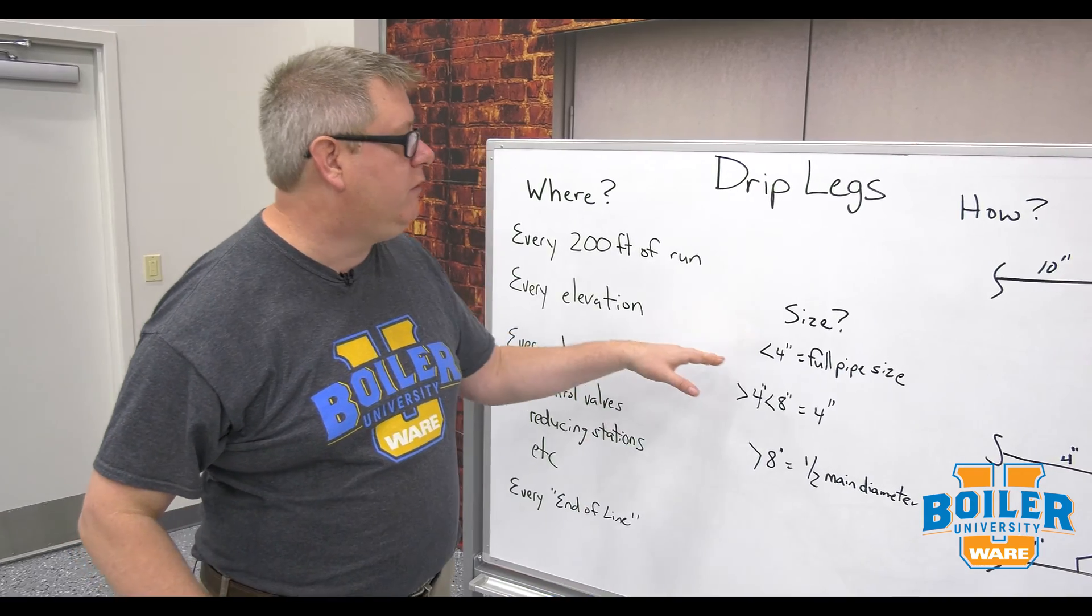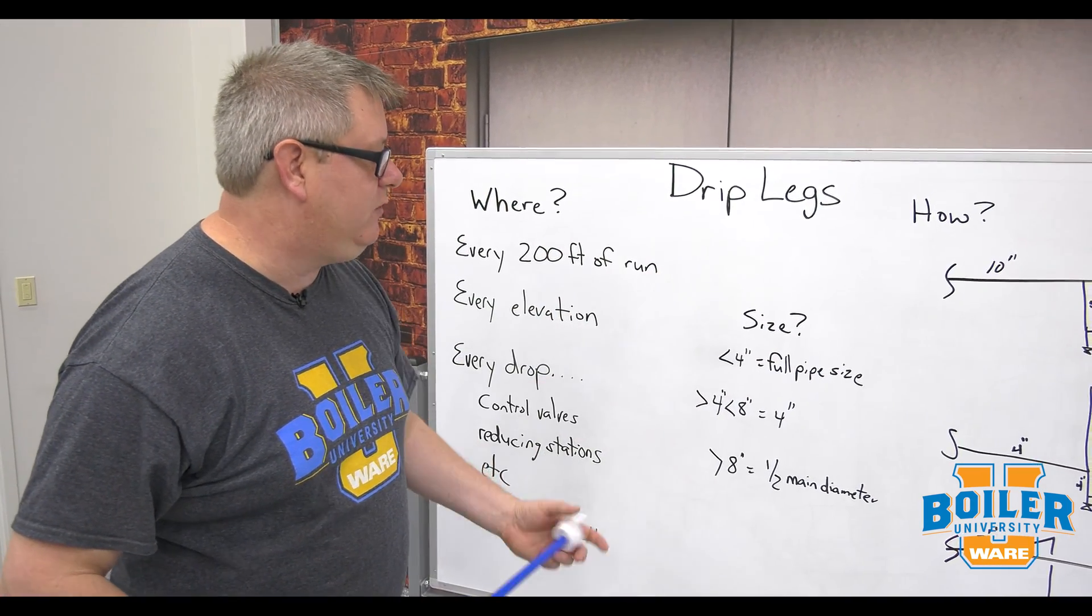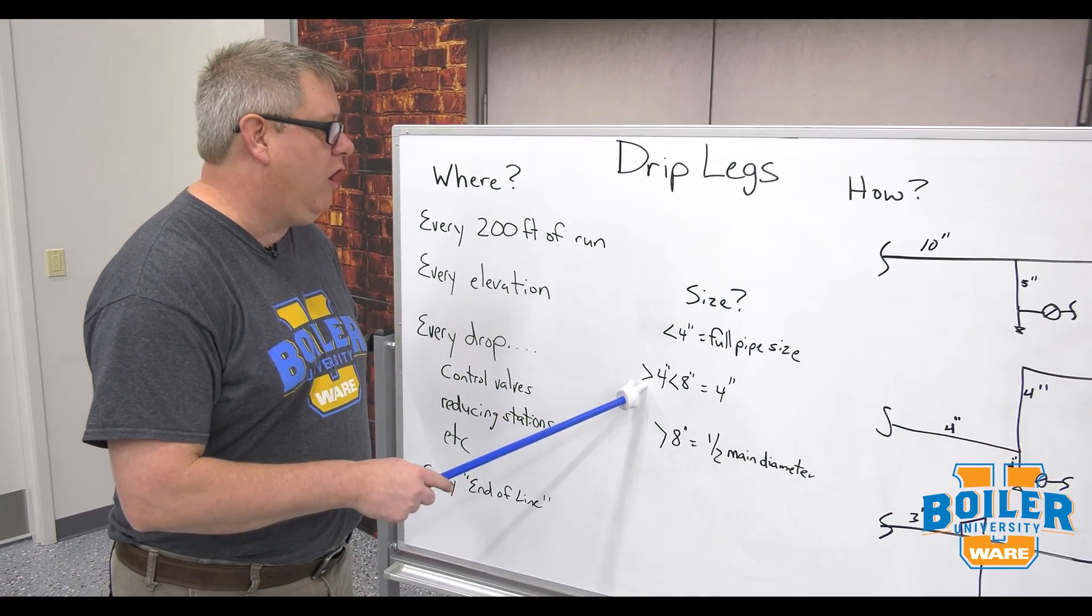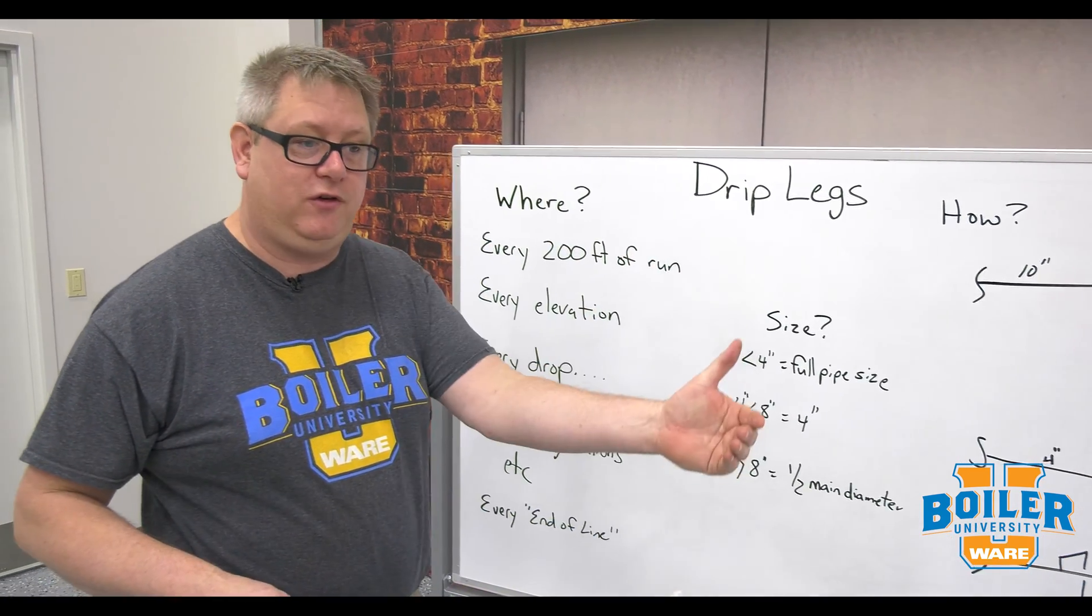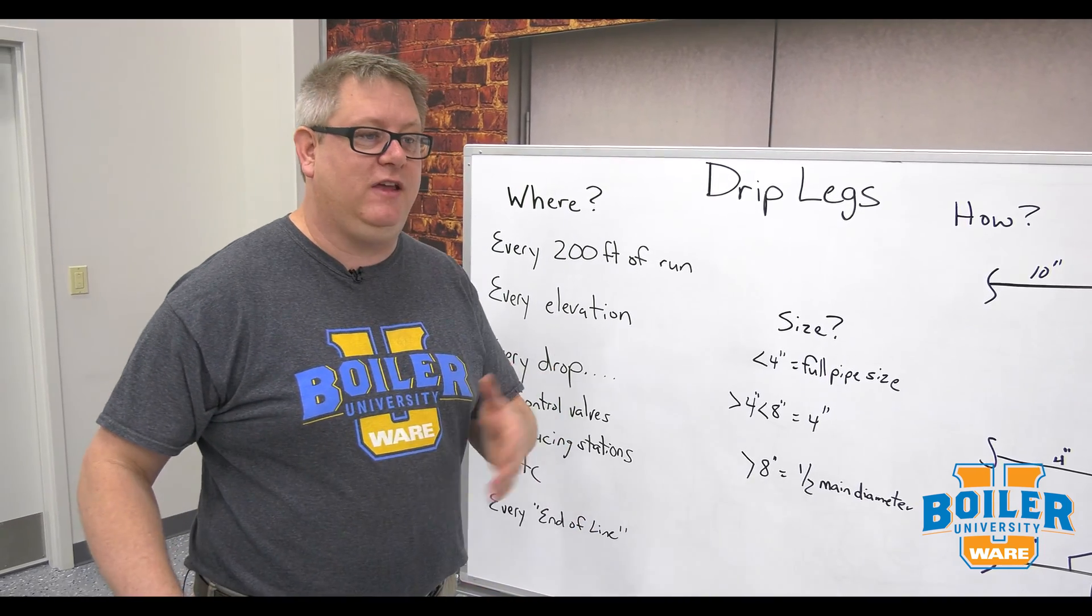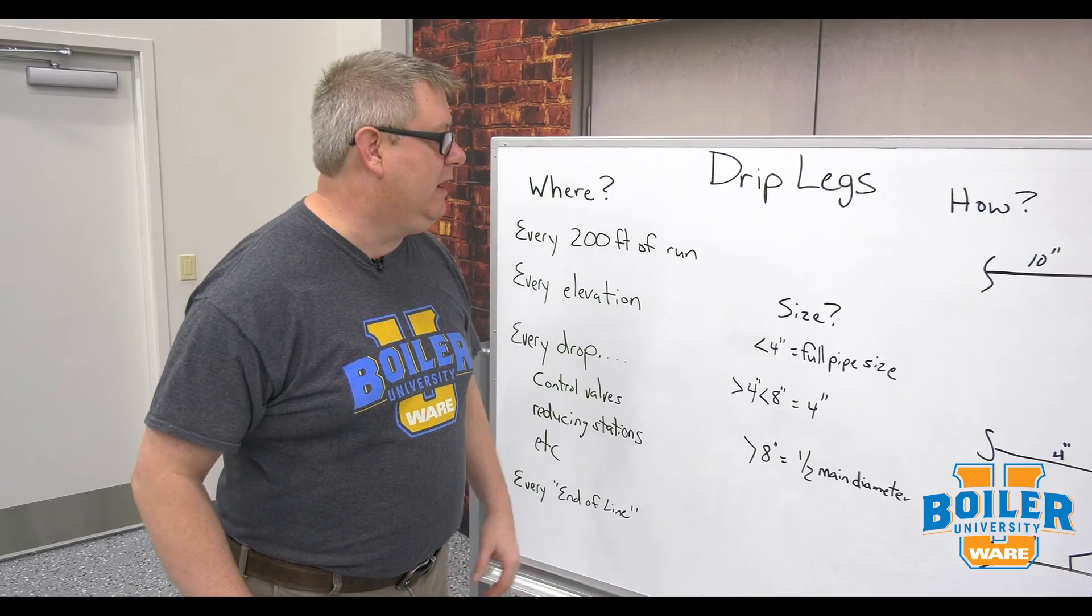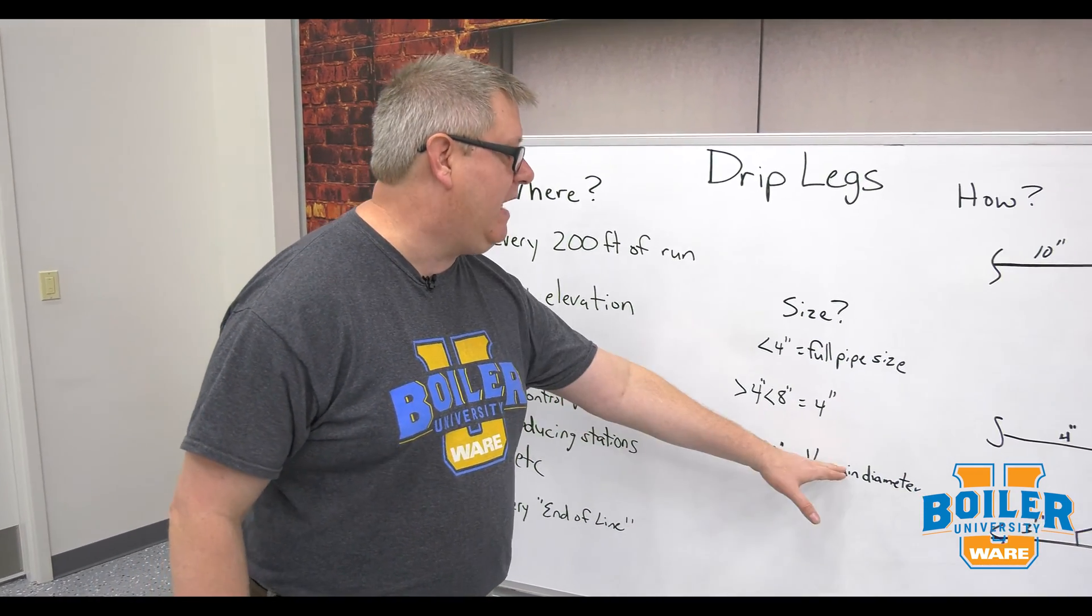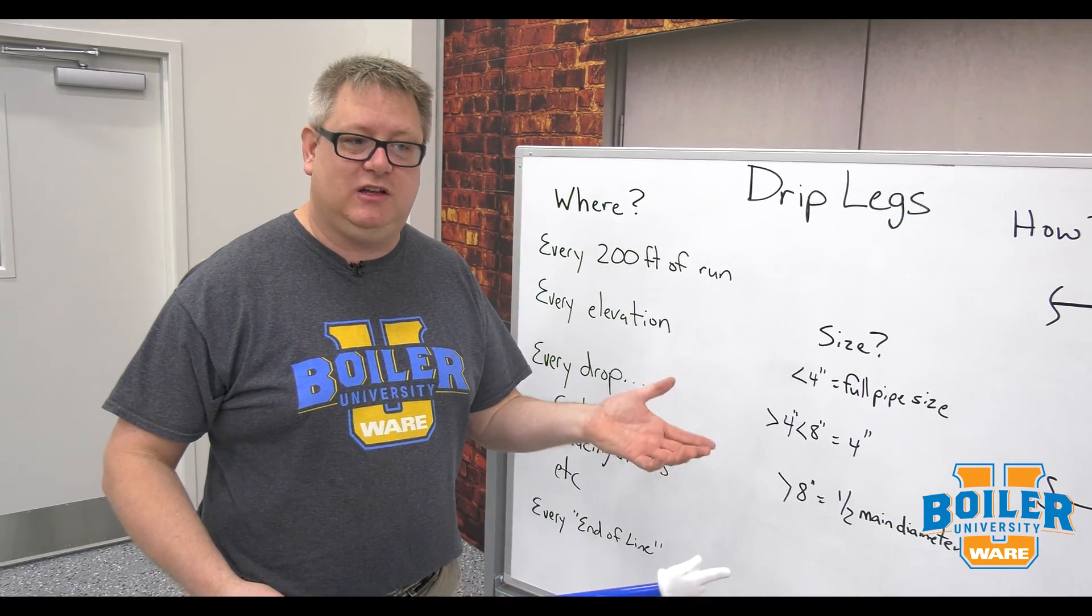So we use a full-size T to drop down and a full-size diameter drop for collection of the condensate. If we're larger than a 4-inch main, we're going to use 4-inch for our drip leg up to 8-inch pipe. So basically that's half until we get to 8 inch. Above an 8-inch main, we're going to use half of the main diameter. So if we have a 12-inch main, a 6-inch drip leg; 8-inch main, 4-inch drip leg.